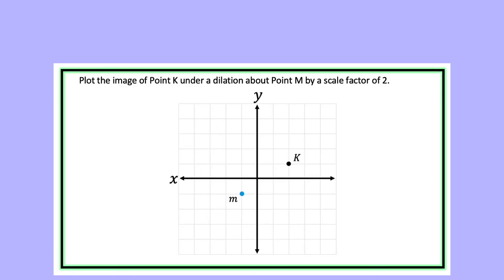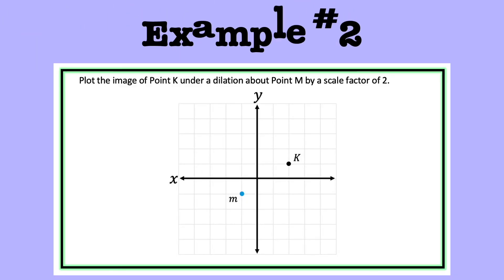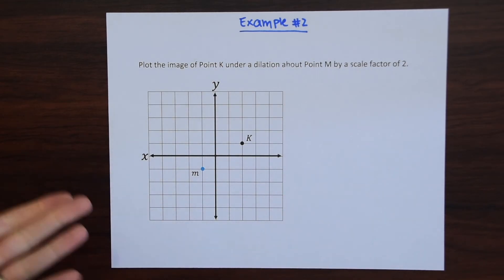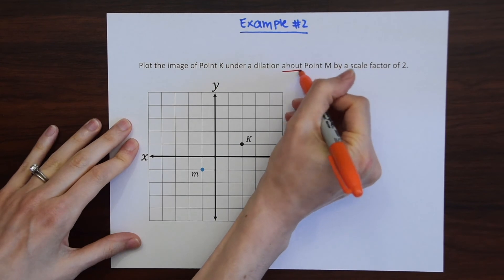On to example number two. Plot the image of point K under a dilation about point M by a scale factor of two. So what's different about this kind of question is that we are not dilating about the origin, right? We are dilating about point M.